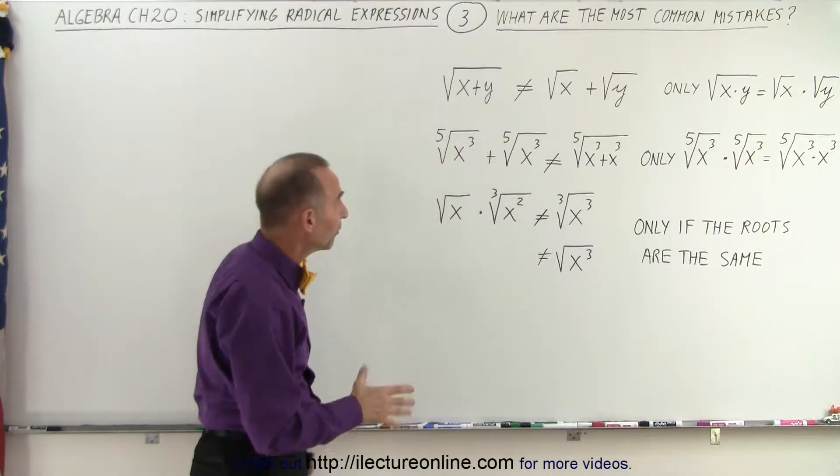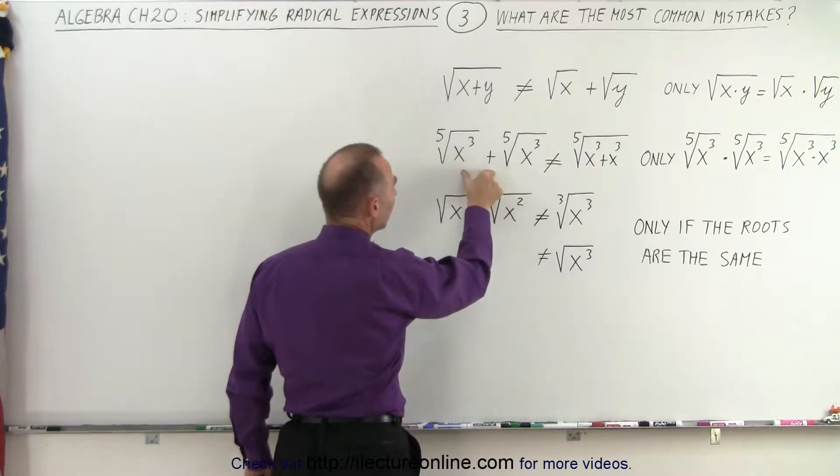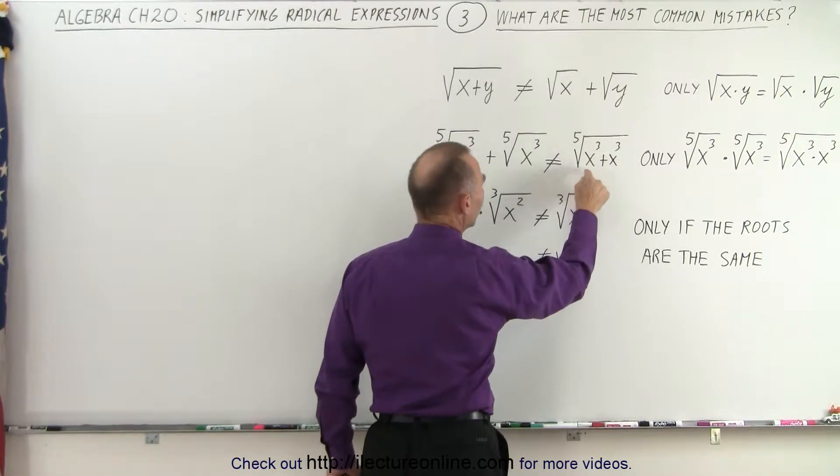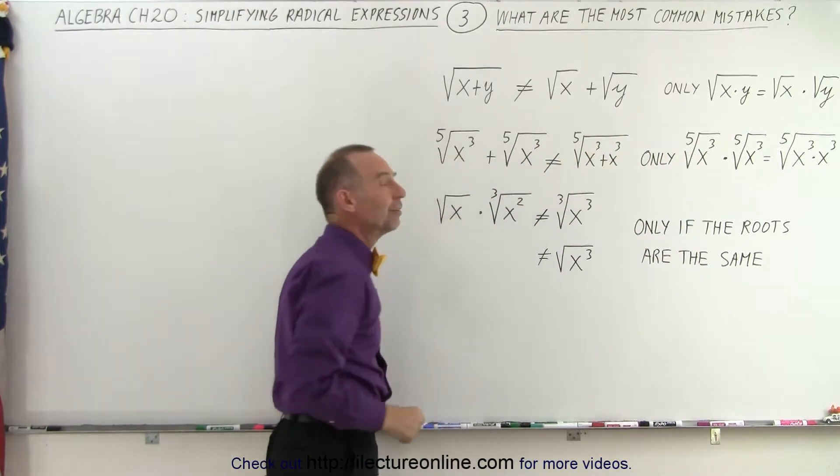And in reverse, if for example we have the fifth root of x cubed plus the fifth root of x cubed, we cannot write them together like the fifth root of x cubed plus x cubed. We can only do so if they're multiplied, not if they're added.